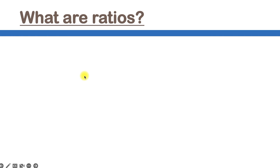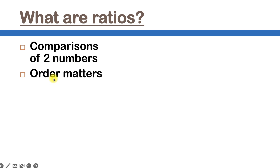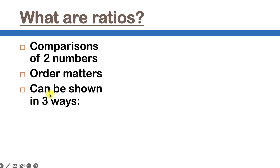So first of all, what exactly are ratios? Ratios are comparisons of two numbers, and the order of these two numbers is really important. And there are three ways to write these ratios.